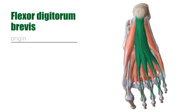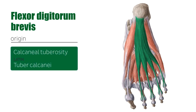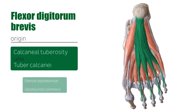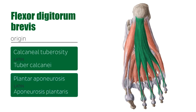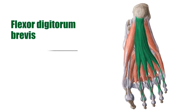In terms of its origin points, you can see here on this image that this muscle originates at the calcaneal tuberosity — the tuberosity of the calcaneus — as well as the plantar aponeurosis, which also serves as an origin point for the flexor digitorum brevis. When it comes to the insertion points, distally this muscle divides into four tendons moving towards the second toe all the way to the fifth toe.